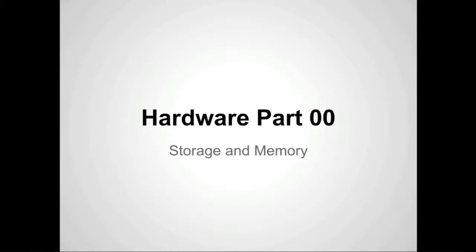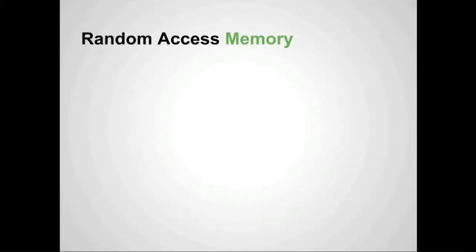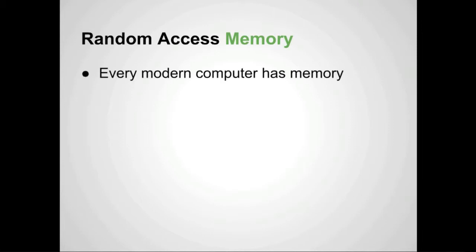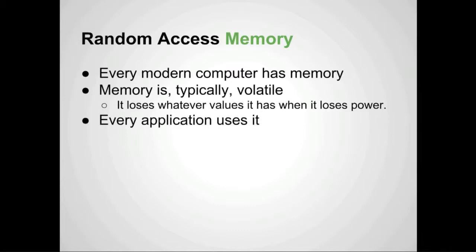We're now going to look at hardware storage and memory. First, I want to talk about random access memory, specifically RAM. Every modern computer has memory, from your smartphone to your desktop — everything has some kind of memory. It's typically volatile, meaning it loses its information when it loses power. The things stored in it are temporary. Every application uses it when you fire up any kind of program.